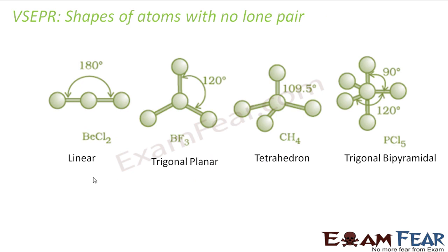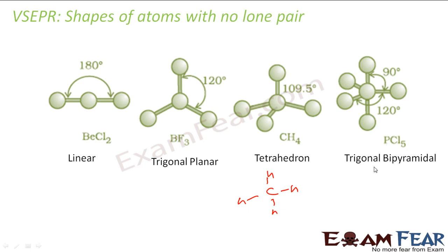For example, BeCl₂ gets a linear shape. BCl₃ gets a trigonal planar shape because it has three bonds. The tetrahedral example is CH₄ — methane has no extra electrons on carbon and only four atoms attached. Phosphorus pentachloride (PCl₅) is trigonal bipyramidal.